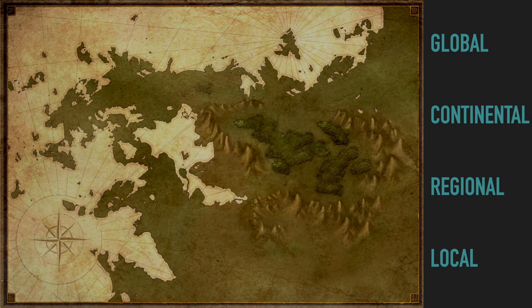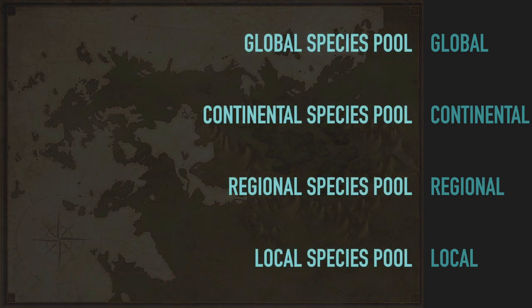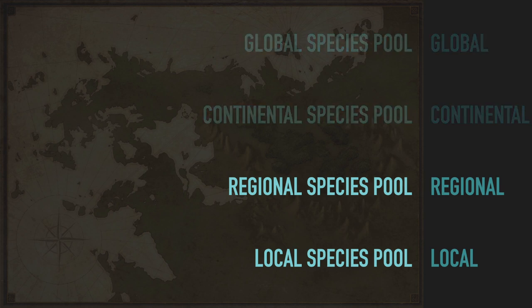The characterization of the distribution of organisms in space is called biogeography. And the ecological study of such distributions across large spatial scales is called macroecology. Importantly, the macro here refers to the geographic scale, not to the size of the organisms — so you could, for example, talk about microbial macroecology. The collection of all the species in a given place is called the species pool, so we can talk about local, regional, continental, or global species pools. We'll focus on the latter two scales, regional and local, because they are more relevant to the type of analysis with which we will be working.